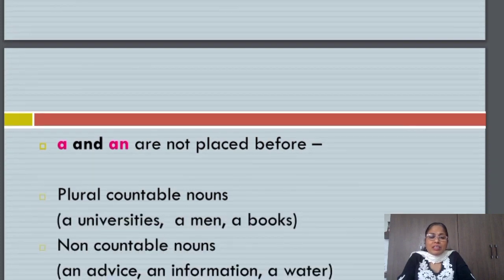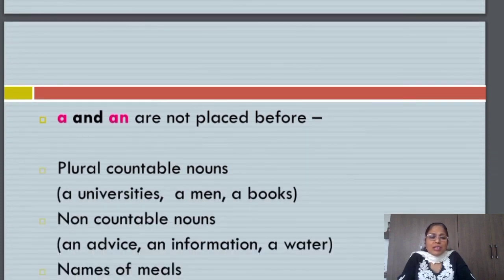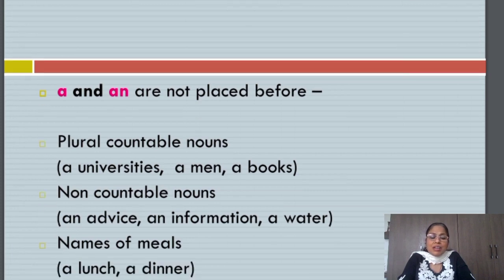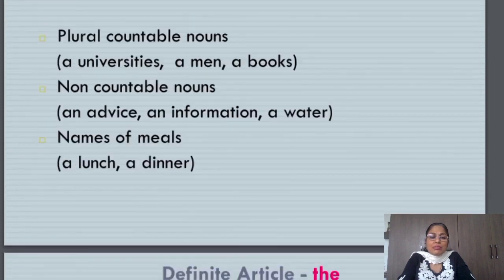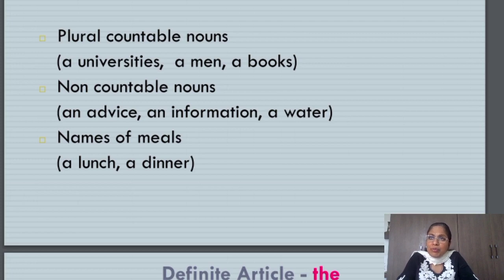Let us understand where A and AN are not placed. A and AN are not placed before plural countable nouns. I cannot say a universities, a men, a books. I cannot use them before non-countable nouns, which might be abstract nouns also. I can't say give me an advice. Can you give me an information please? Wrong. I have to say can you give me a piece of information? Give me a water. Wrong. Give me a coffee. Can you get two coffees for me? Wrong. Please get two cups of coffee for me. Correct.